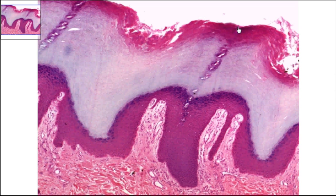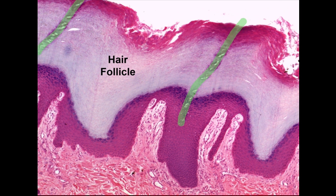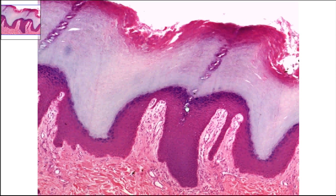Now, if we notice, we have this kind of almost jagged line coming through here. This is going to be a hair follicle. It's not completely visible in this particular cut — you're only seeing little portions of it. This can show you how a hair follicle cuts directly through the epidermis.